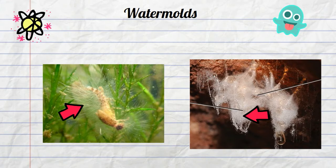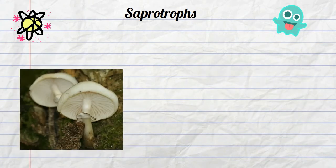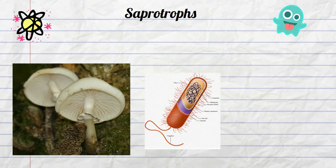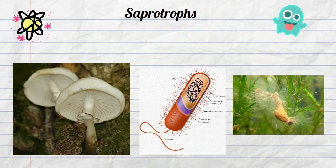So in summary, there are three major groups of Saphrotrophs: Fungi, Bacteria, and Water Mold.